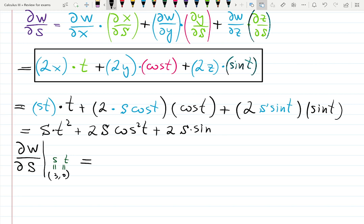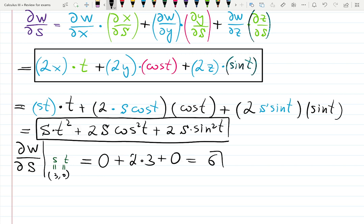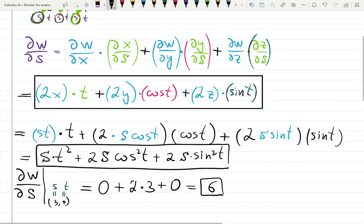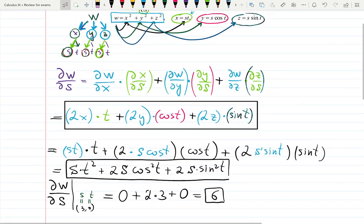Now I'm ready to plug 3 and 0. S is 3, T is 0, that's 0. Plus S is 3 but T is 0, cosine T is 0, cosine 0 is 1, which is good, so it's gonna be 2 times 3. Plus S is 3 and T is 0, sine 0 is 0. The answer is 6 and that is the final answer.